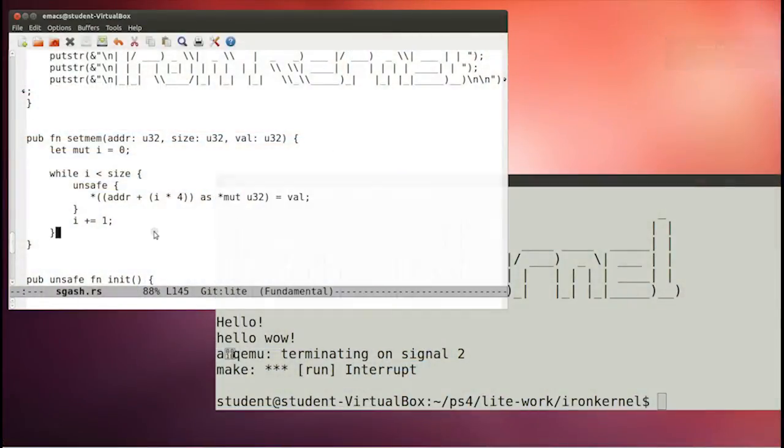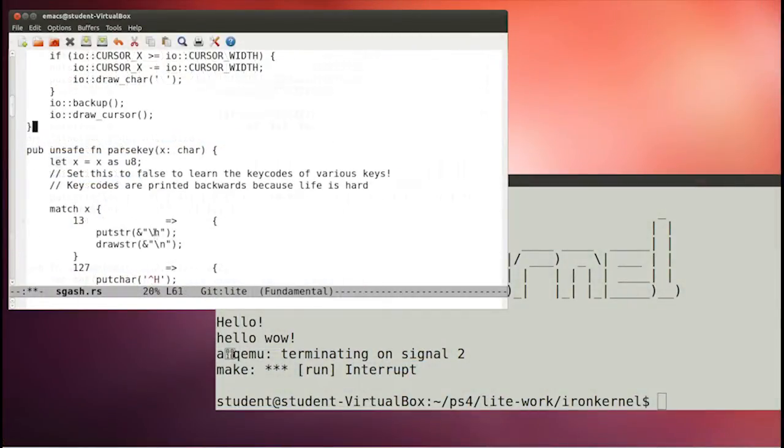Let me show you some other things. Parse key is what's getting called when the keyboard interrupt happens, and there's a few other layers before that, which we'll talk about maybe today, but probably more next class. But this function is getting called, and depending on the key press, it's doing something.